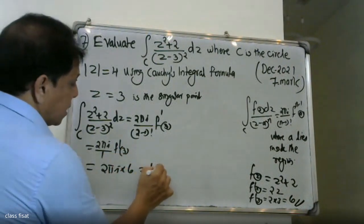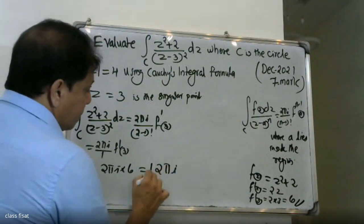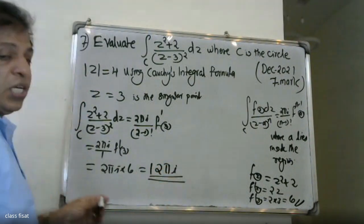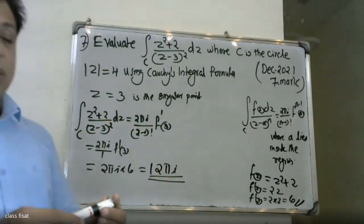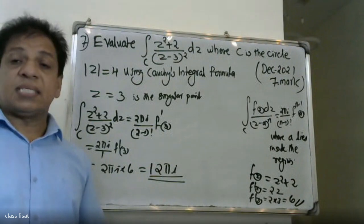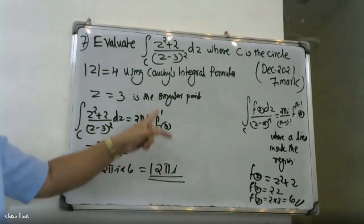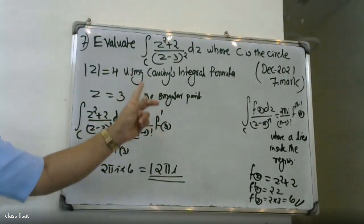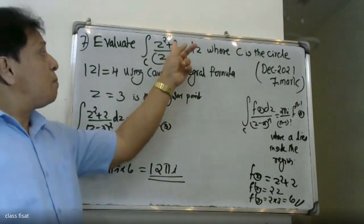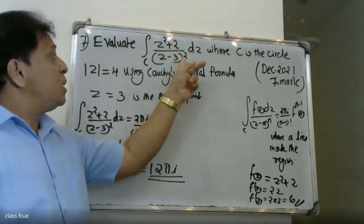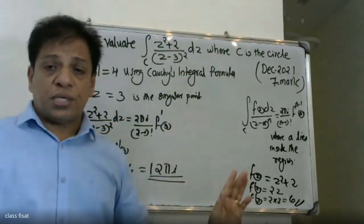So using Cauchy's integral formula, the answer is 2πi times f'(3) = 2πi times 6 = 12πi.